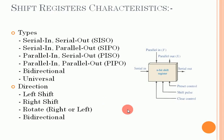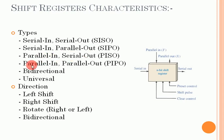The types of shift registers are: first, Serial In Serial Out (SISO), sometimes also called a first-in first-out shift register. Second is Serial In Parallel Out (SIPO). Third is Parallel In Serial Out (PISO). Fourth is Parallel In Parallel Out (PIPO). We also have bidirectional shift registers and universal shift registers. We will elaborate on all of these one by one in our next lectures.